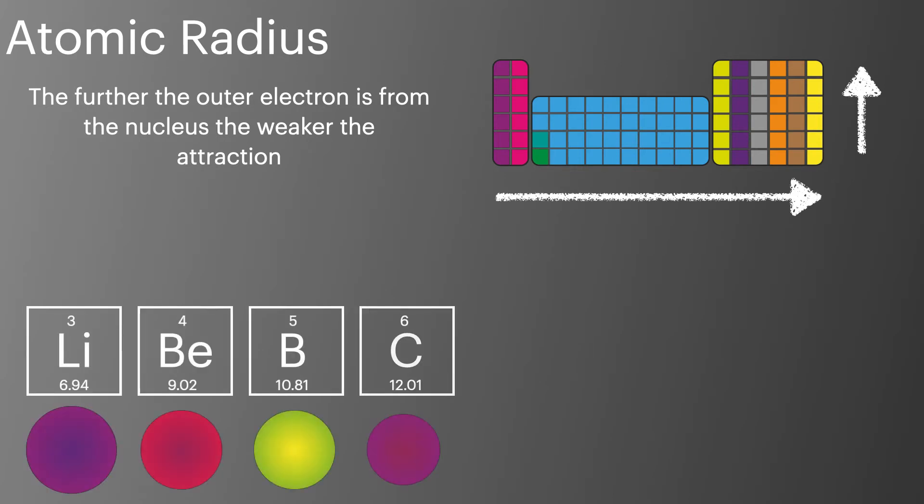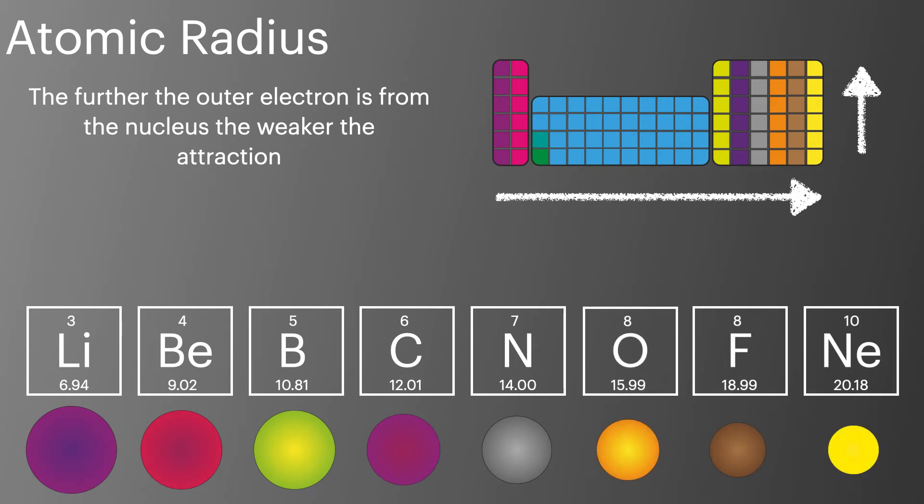This is easy to see as we go across period 2 on the periodic table starting with the big atoms of lithium and finishing with the small atoms of fluorine and neon. So as we decrease the atomic radius moving the highest energy electron close to the nucleus the ionisation energy goes up.